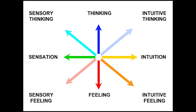The two non-rational functions are sensation and intuition. Sensation is just what you think it is — touch, sight, hearing, taste, and hands-on kinds of things, of what needs to be done right now. And intuition is what we're going to talk about. But they are ways of getting information; they're just not cognitive.